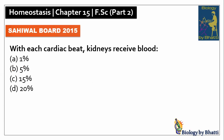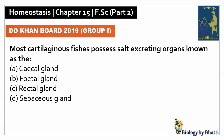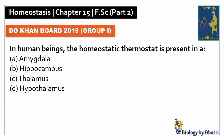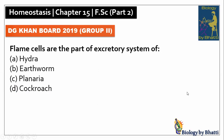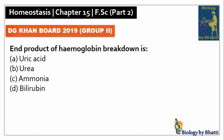Sahiwal Board 2015: with each cardiac beat the kidney receives 20% of the body's blood, so the answer was D option. DG Khan Board 2019 Group 1: most cartilaginous fishes possess salt-excreting organs known as the rectal gland, the answer was C option. In human beings, the homeostatic thermostat is present in the hypothalamus, so the answer was D option. Flame cells are part of the excretory system of planarians, the answer was C option. DG Khan Board 2019 Group 2: the end product of hemoglobin breakdown is bilirubin.